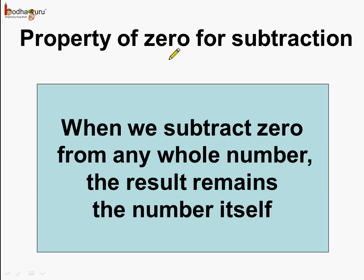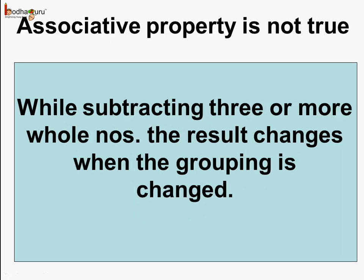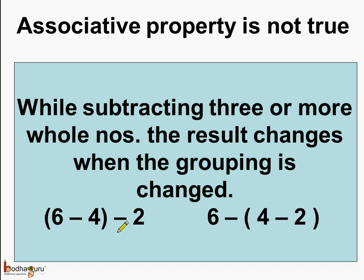Today we saw two properties of subtraction of whole numbers. First, we saw that the associative property is not true, which means while subtracting 3 or more whole numbers, the result changes when the grouping is changed. For example, with 6 minus 4 minus 2, if we do 6 minus 4 first versus 4 minus 2 first, the answers are not the same in both cases.